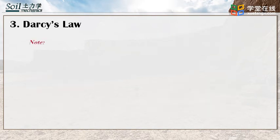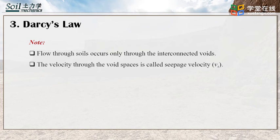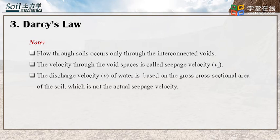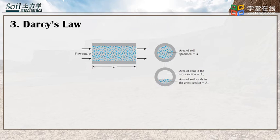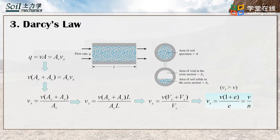It should be noted that flow through soil occurs only through the interconnected voids. The velocity through the void space is called seepage velocity. The discharge velocity of water is based on the gross cross-sectional area of soil, which is not the actual seepage velocity. The actual seepage velocity is the actual velocity of water flowing in the voids, which is greater than the discharge velocity. The area of soil A includes the area of voids in the cross-section AV and the area of soil solids in the cross-section AS. Based on mass conservation, the seepage velocity Vs equals the discharge velocity V divided by the porosity of soil.